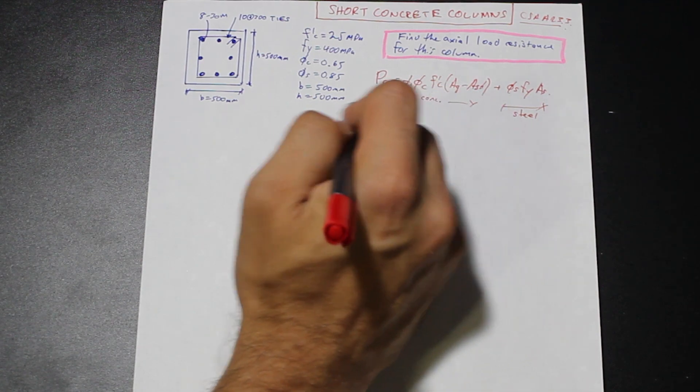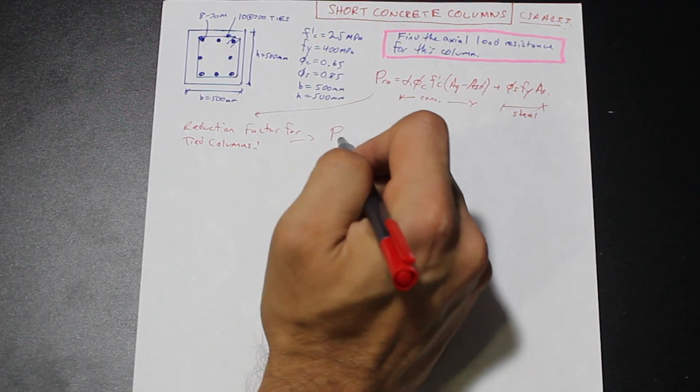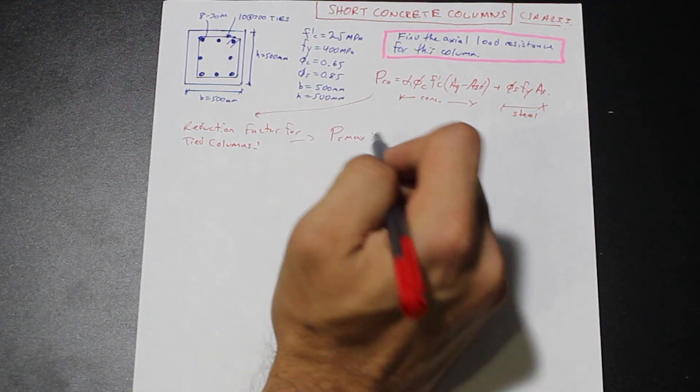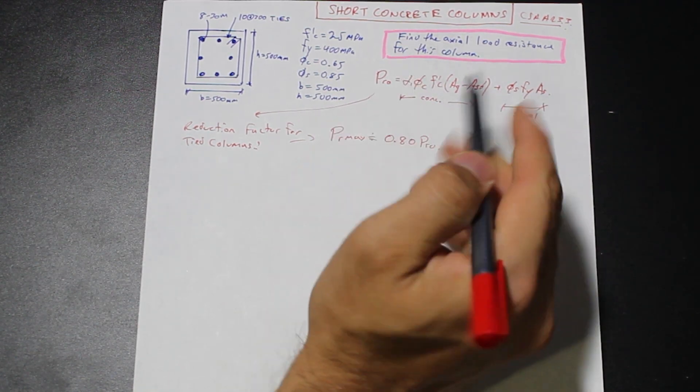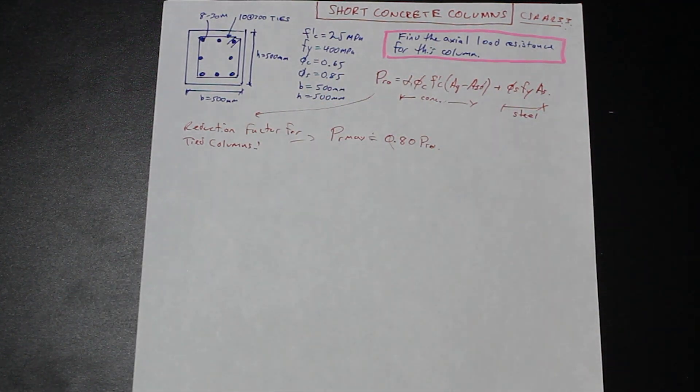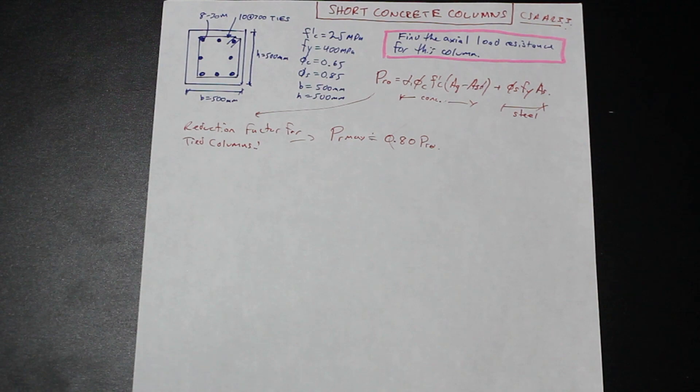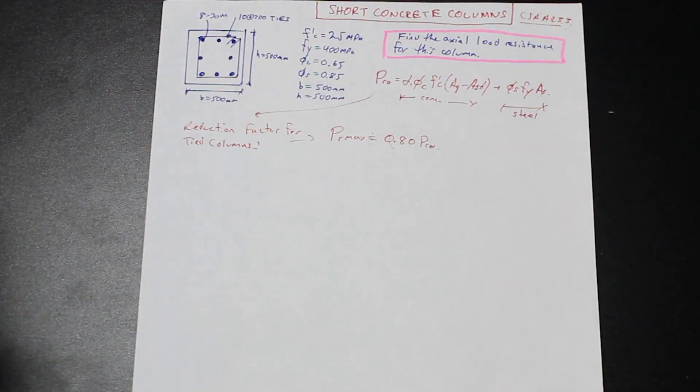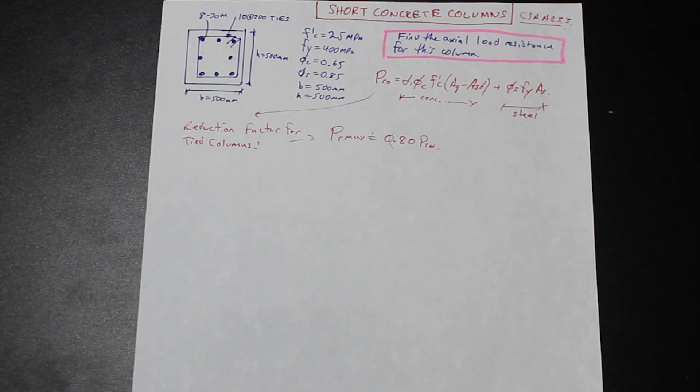So the reduction factor, I'm just going to put it over here. So the reduction factor for tied columns. So our maximum axial resistance is equal to 0.8 of PR0. So this formula, we're going to take 80% of that and we're going to assume that that's the maximum capacity that the column can take. And why is that? That seems very conservative and it is because we're also using factored loads. On top of factored loads, we're decreasing the column's capacity by 20%.